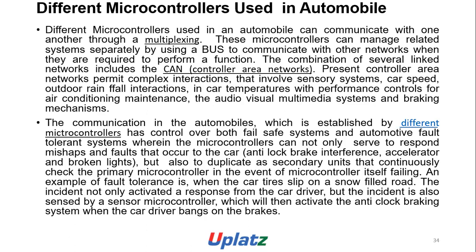Communication in automobiles is established between microcontrollers as control over core file-type systems or automobile systems, where motor components can encounter faults that affect the core. Anti-electromagnetic interference is managed, and duplicate heavy units continuously check the primary control in the event of microcontroller failure. An example: when a car tries to slip on snow, the incident activates response from the car driver, and the controller activates the anti-lock braking system when the driver brakes.